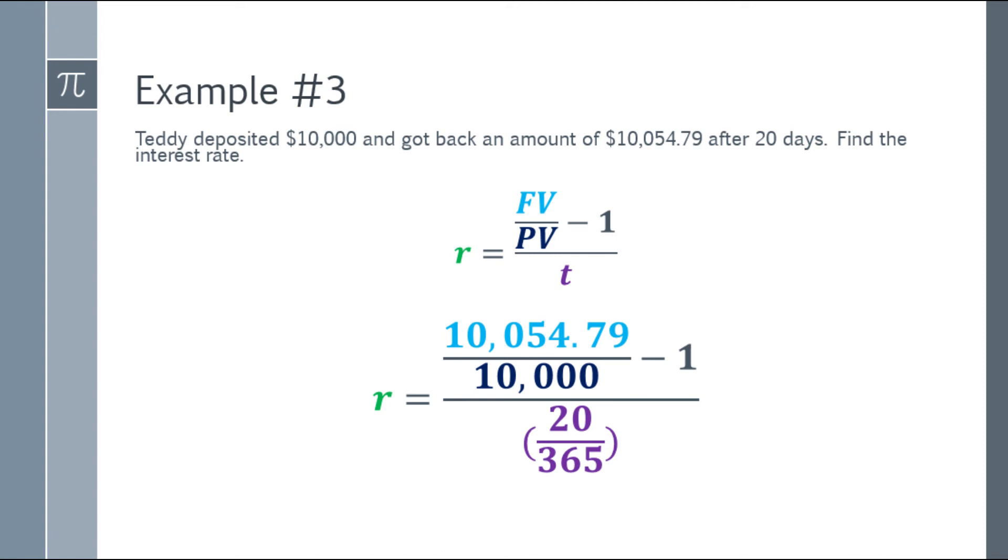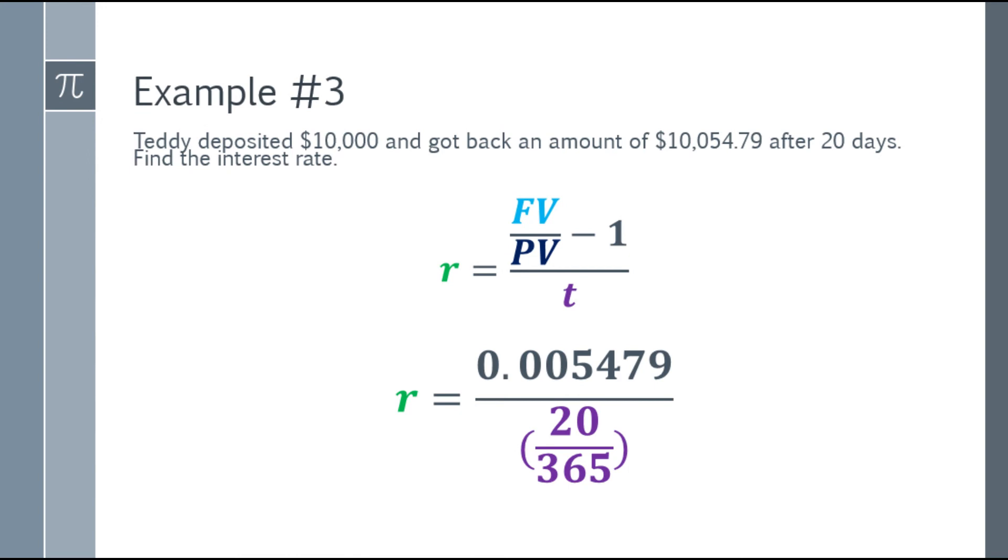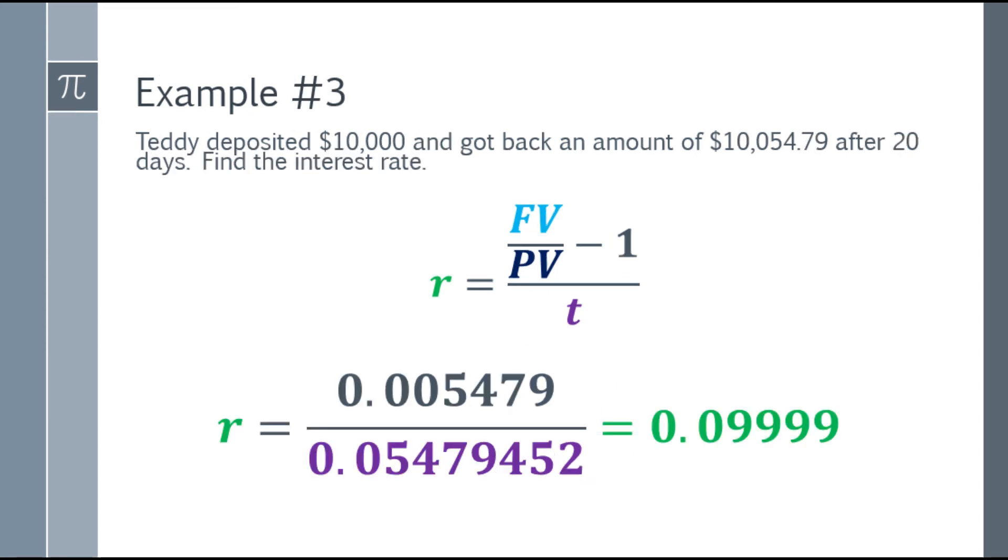Let's simplify the numerator. On your calculator, 10,054.79 divided by 10,000, that answer minus 1, and the answer is 0.005479. Let's simplify the denominator next. 20 over 365, the answer is 0.05479452, there's more but I cut it off. Simplify it further for the last step. That's 0.005479 divided by 0.05479452, and the answer will be 0.09999.